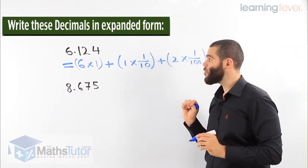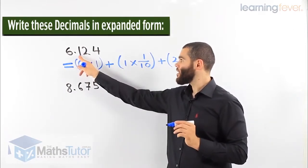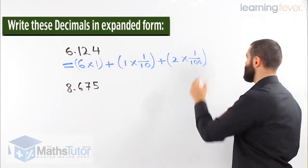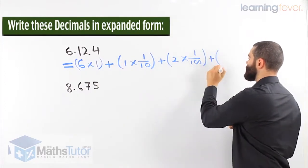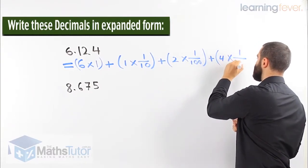And we look, we have a 4. Now the 4, which place value does it hold? We have tenth, hundredth, thousandth. So plus 4 times 1/1000.